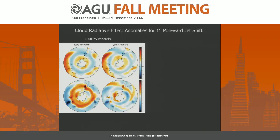Now, if you look at the longwave cloud radiative effects — which is basically the high-cloud behavior — all of the models that we looked at really do about the same thing. They all give you sort of this tripolar pattern with a poleward shift of the high clouds with the jet. So all of the models are doing the same thing in terms of the longwave. It seems to be the shortwave, and presumably the low clouds and a lot of the microphysical processes, that differentiate the two model types.